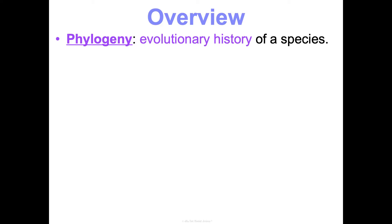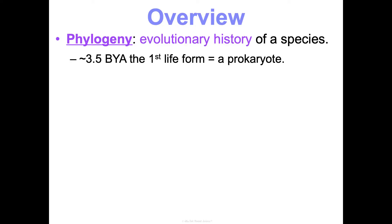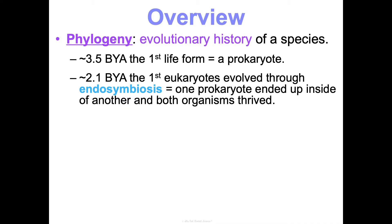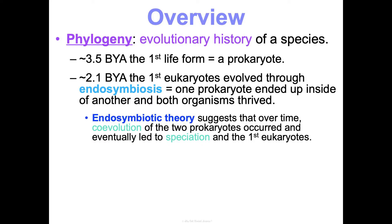Taxonomy is different from phylogeny, which takes into consideration the evolutionary history of a species. Approximately 3.5 billion years ago, it is predicted that the first life form was a prokaryotic organism. Then approximately 2.1 billion years ago, it's believed that the first eukaryotes evolved through something called endosymbiosis — essentially one prokaryote ended up inside of another prokaryote and both organisms thrived together. Endosymbiotic theory suggested co-evolution happened.